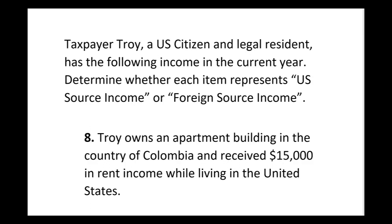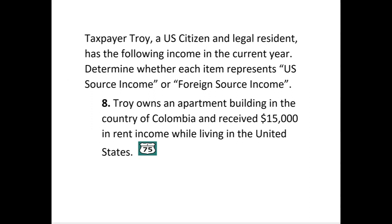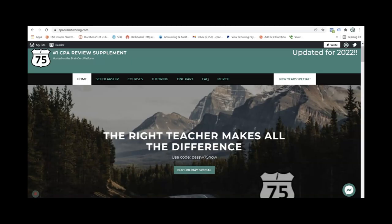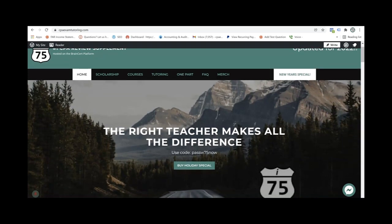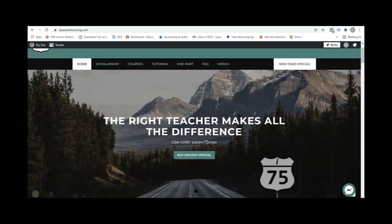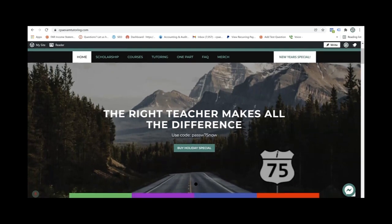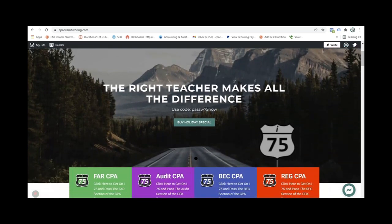Number eight: Troy owns an apartment building in Colombia and received $15,000 in rent income while living in the United States. Is this US source income or foreign source income? Leave your answer in the comments below. Don't forget to like and subscribe — it helps the channel a lot. If you need more help with multi-jurisdictional tax or any part of the CPA REG exam, go to CPAexamtutoring.com and get on I-75, where the right teacher makes all the difference.